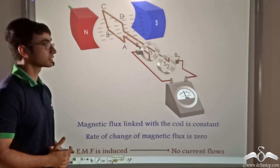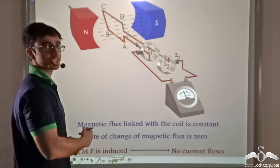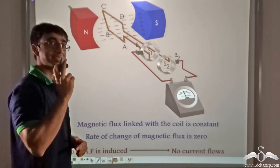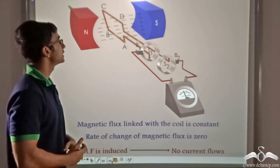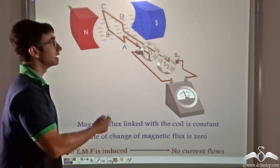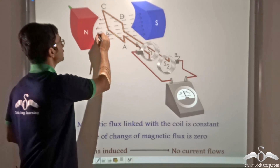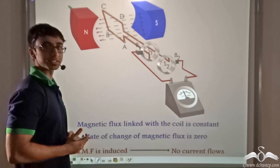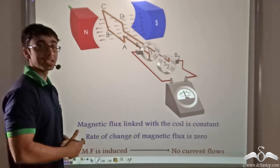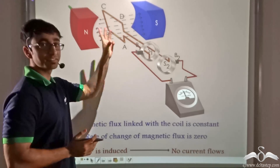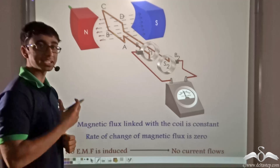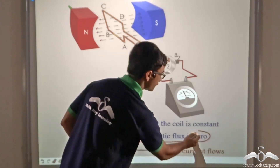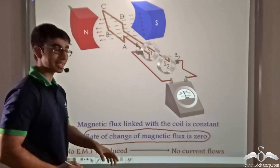Now let us see how it functions. Initially, the generator is at a particular position. Whenever there is a magnetic flux linked with a coil, EMF will be induced only when there is a change in magnetic flux linked with the coil. In this case, let us count the number of magnetic field lines linked with the coil — it is six. The magnetic field lines are neither increasing nor decreasing; they remain constant. So when there is no change in magnetic field lines through the coil, that is no change of magnetic flux, no EMF will be induced. Since the rate of change of magnetic flux is zero, no EMF is induced and hence no current flows.